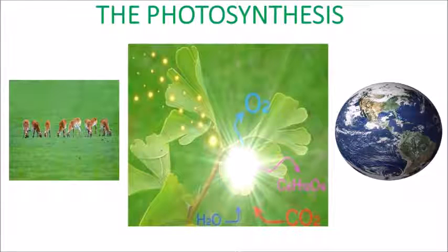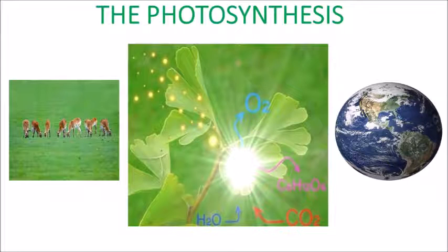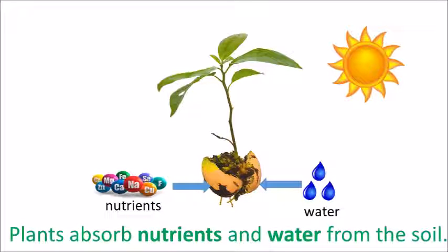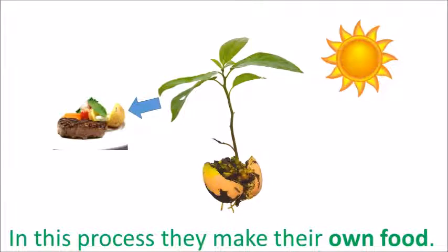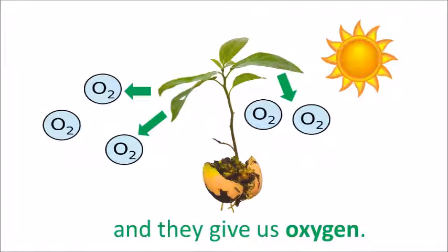Photosynthesis. Photosynthesis is very important for animals and for the planet. In photosynthesis, plants absorb nutrients and water from the soil, and carbon dioxide from the air during the day. In this process they make their own food, and they give us oxygen.